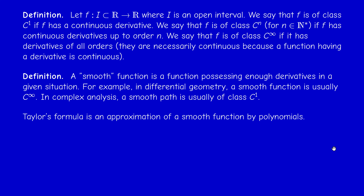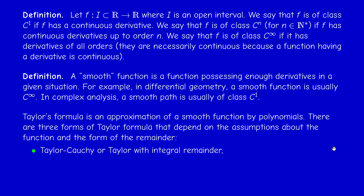Having said this, Taylor's formulas all do the same thing: they provide an approximation of a smooth function by polynomials. There are three formulas because there are three different assumptions about the smoothness of f. We have Taylor-Cauchy (or Taylor with integral remainder), Taylor-Lagrange, and Taylor-Young. What is common to all three is the approximation by polynomials; the difference is in the form of the remainder.